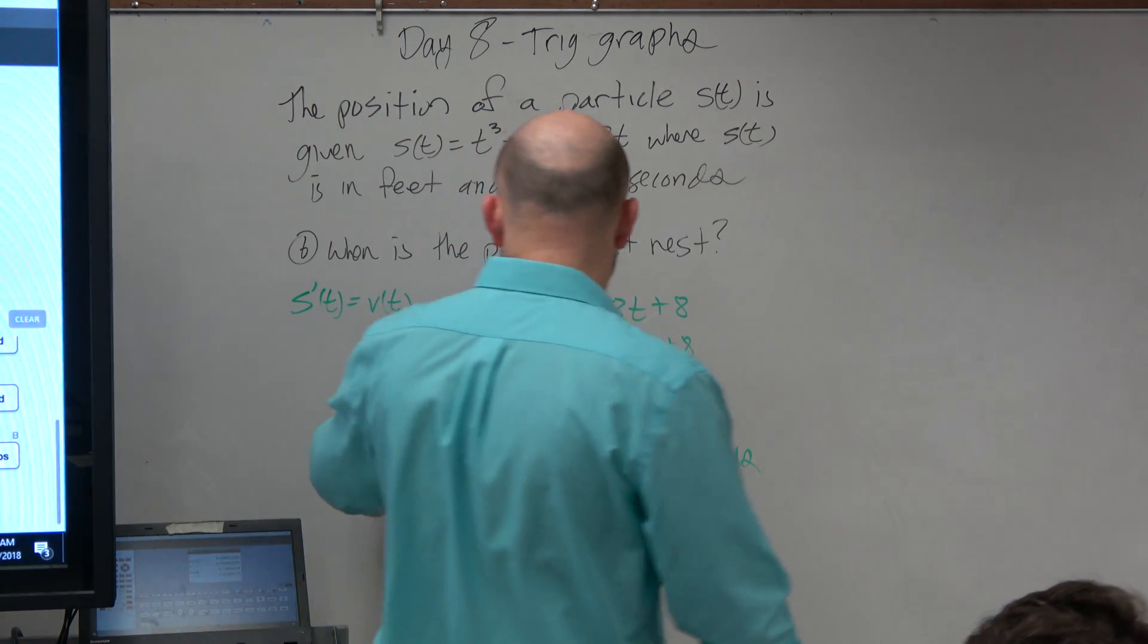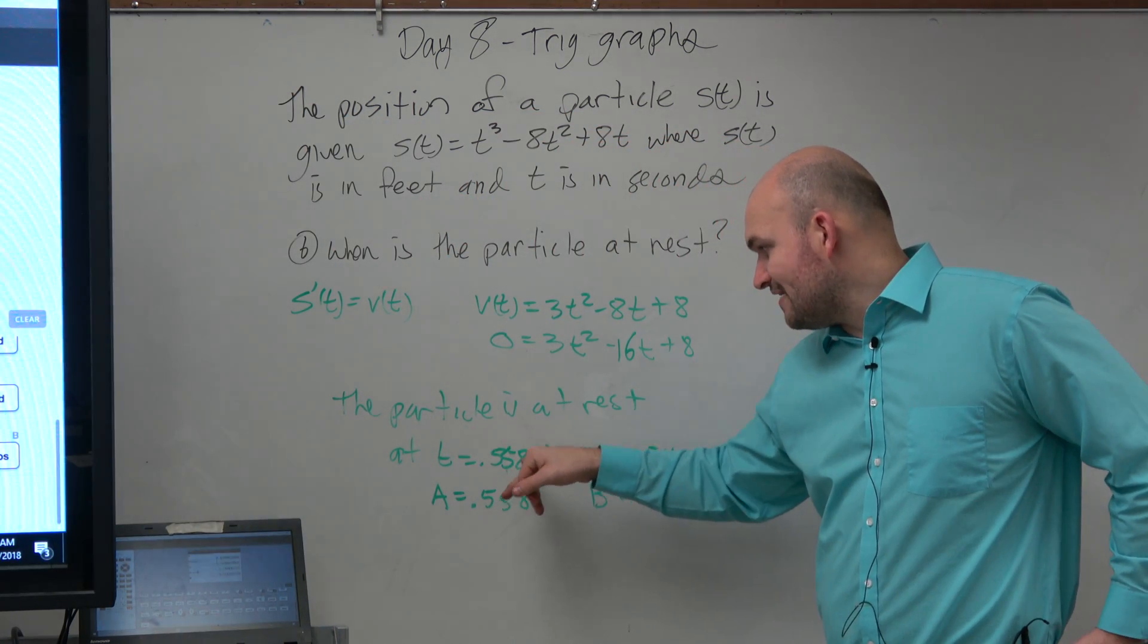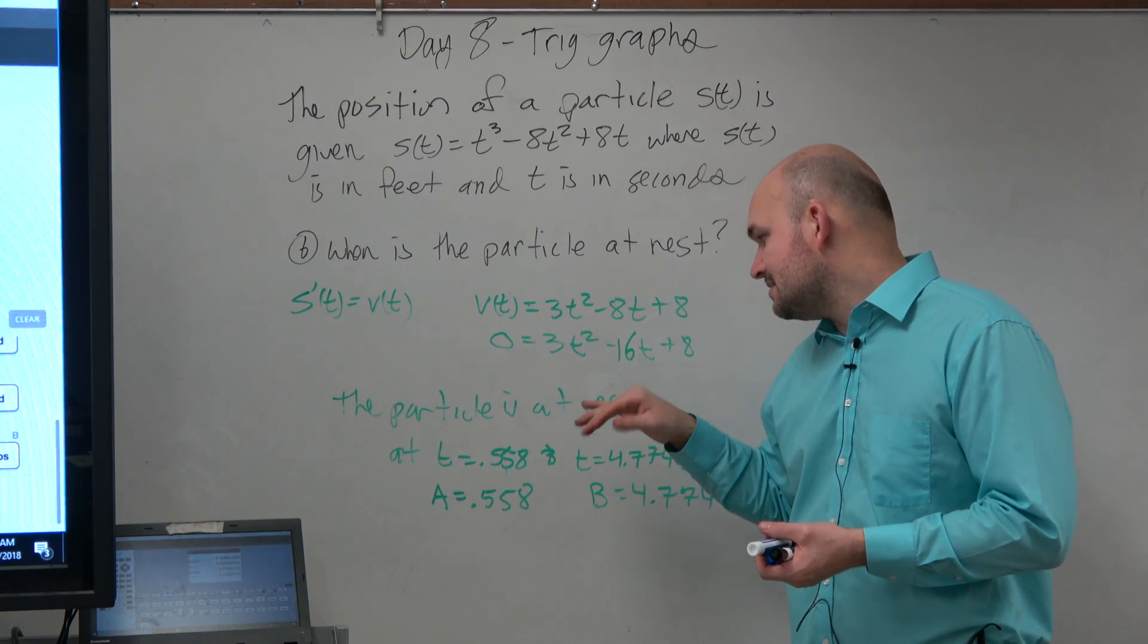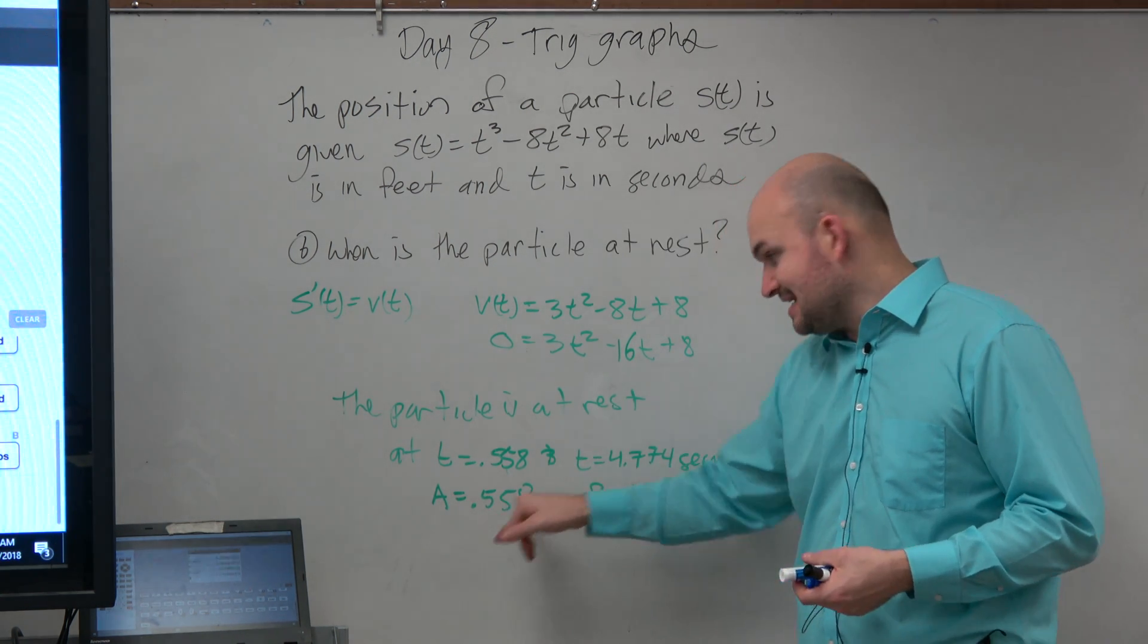If the particle is at rest at t equals 0.558 and 0.4774, and we stored those in our calculator as a and b...